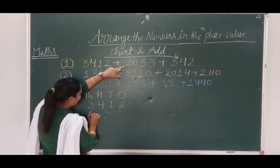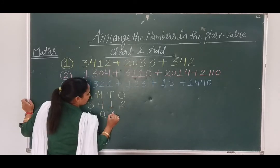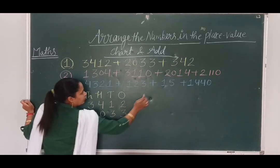Second digit is 2033. 0, 100, 3 tens, and 3 ones.